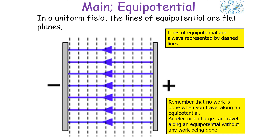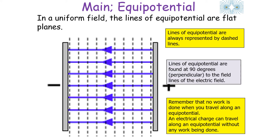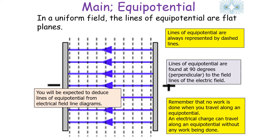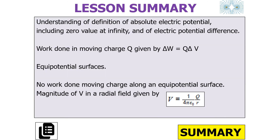For example, in a uniform field the lines of equipotential are flat planes, represented as dashed lines. No work is done when you travel along this surface of equipotential, so an electrical charge can move around any part of the plane without any work being done. Because the lines of equipotential are 90 degrees to the field lines they form those flat planes. You would be expected to deduce the lines of equipotential from the electrical field line diagrams.